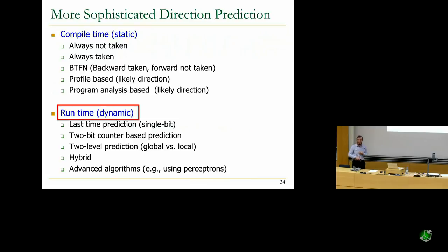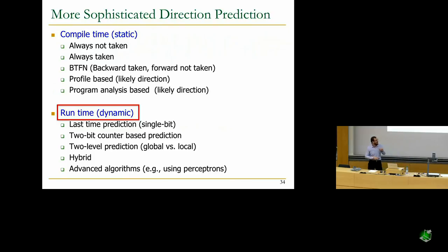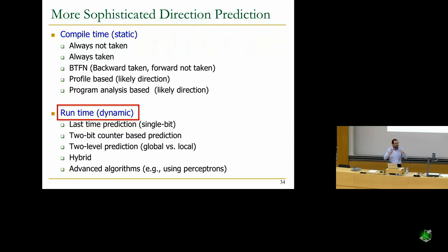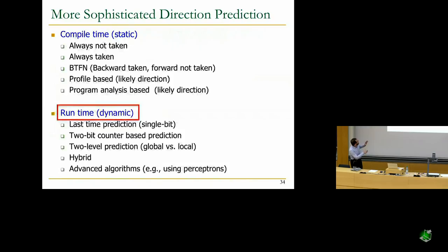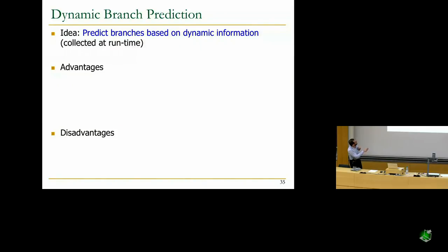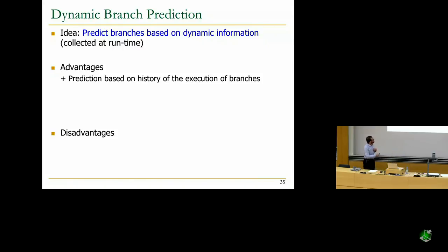That's why people moved to more runtime mechanisms. Even though static methods may be useful in specialized cases, almost all branches today are predicted using runtime mechanisms. The simplest dynamic mechanism is single-bit last-time prediction: if the branch was taken last time, predict taken; if not taken, predict not taken. The common advantage to all dynamic methods is that prediction is based on the history of execution of branches, collected at runtime.